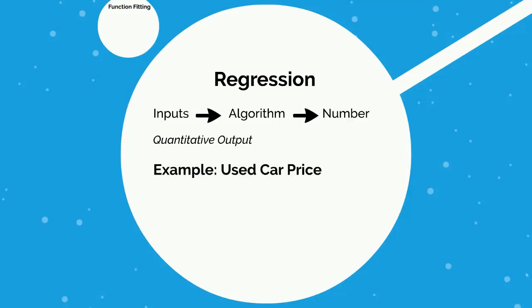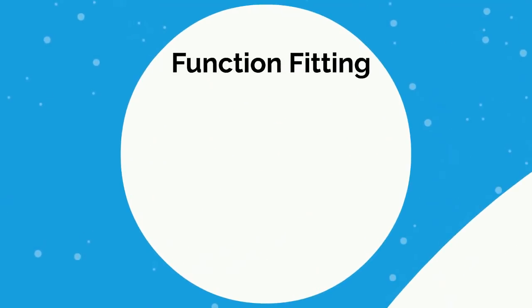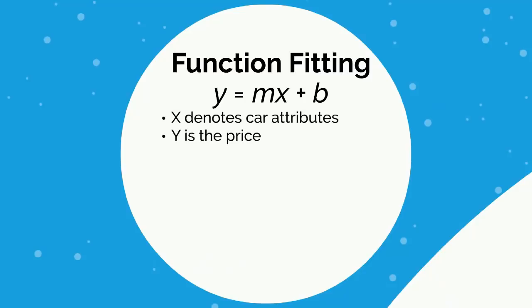Regression could be used for generating a used car price. The inputs would be car attributes such as brand, year, mileage, number of past owners, accident history — any number of inputs. The output is just a numerical price. You're not going to have any classes; instead, one simple quantitative output based on any number of inputs. This is really function fitting, as it's called in statistics — you could have a function y = mx + b.